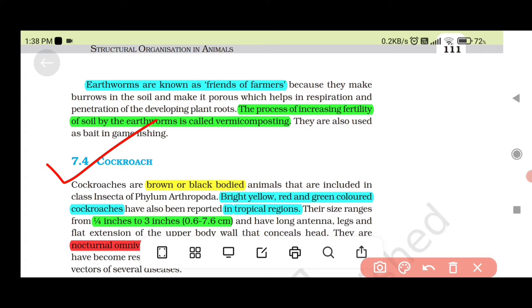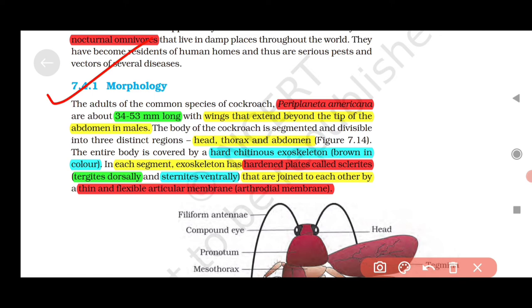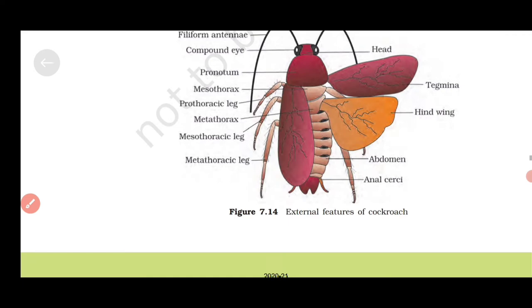7.4 Cockroach: Brown or black bodied, though bright yellow, red and green colored cockroaches exist in tropical regions. They range from 1/4 inch to 3 inches (0.6 to 7.6 cm). They are nocturnal omnivores. 7.4.1 Morphology: Periplaneta americana. Wings extend beyond the tip of the abdomen in males. Body divided into head, thorax, and abdomen. Hard chitinous exoskeleton that is brown in color. In each segment, exoskeleton has hardened plates called sclerites: tergites dorsally and sternites ventrally, joined to each other by thin and flexible articular membrane called arthrodial membrane.